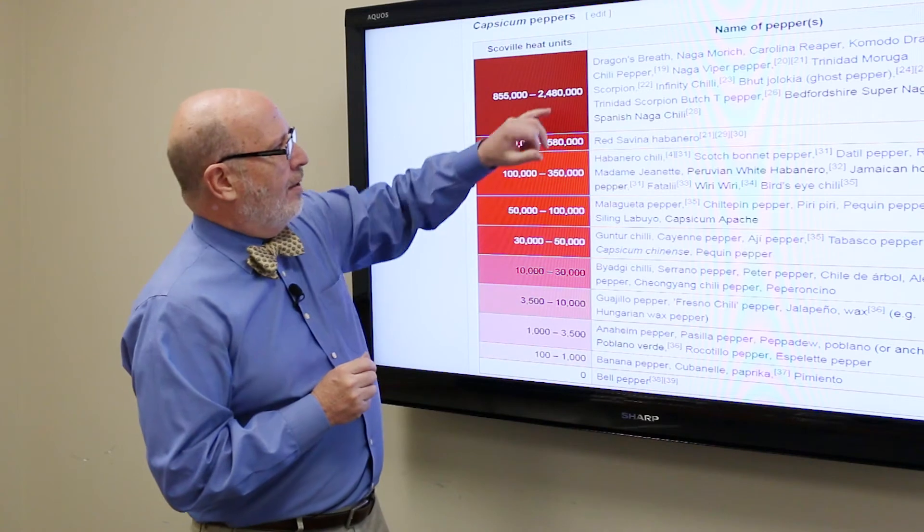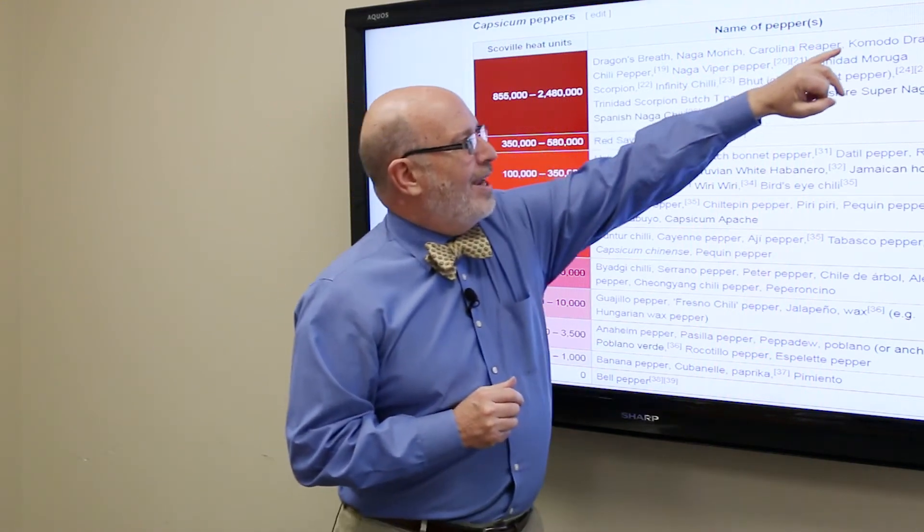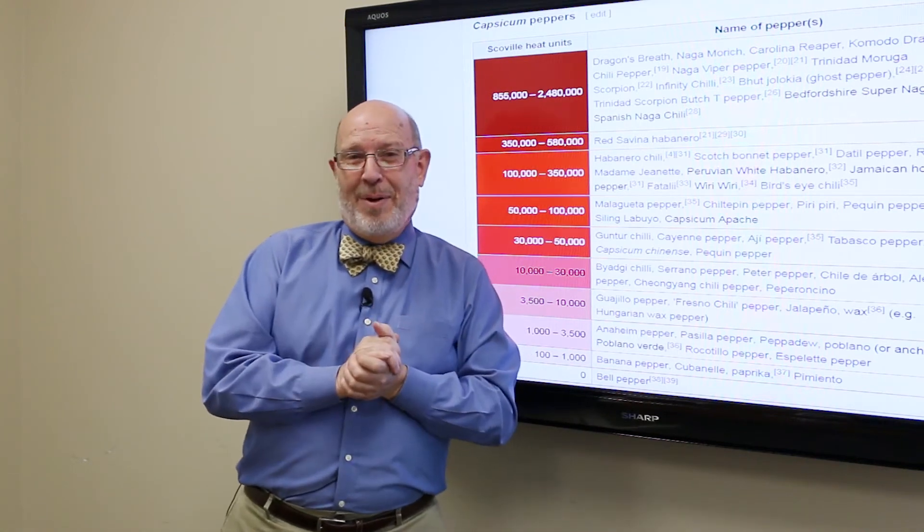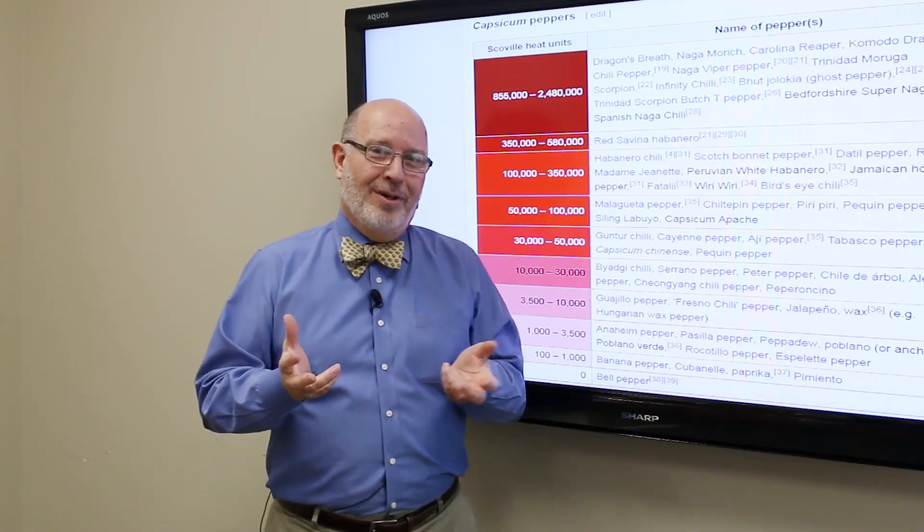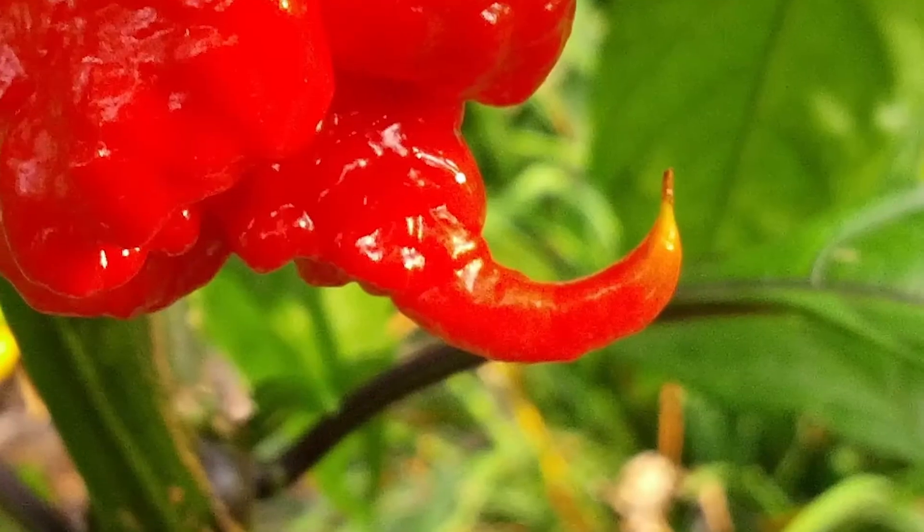Names of these things can be sort of intimidating: the dragon's breath, the Carolina reaper, the dragon. So Carolina reaper seems to be the pepper that is of most interest now in American culture...